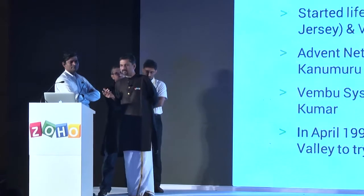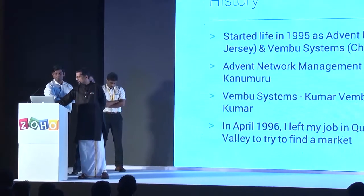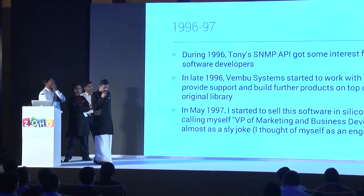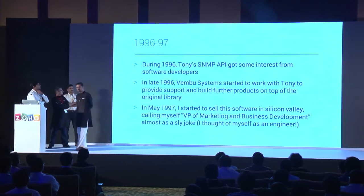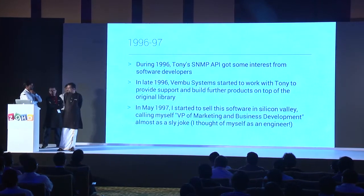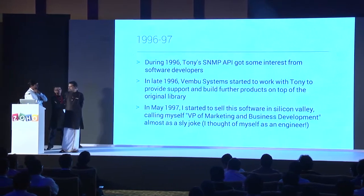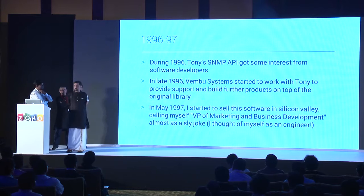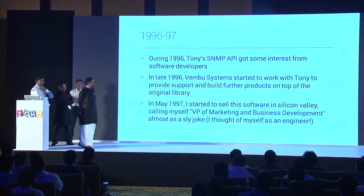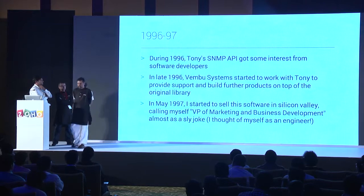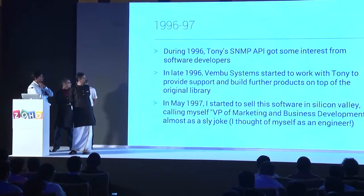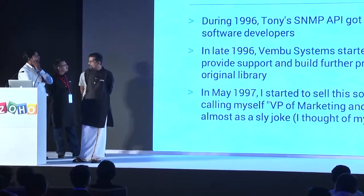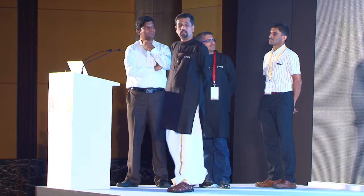It was only in 96, a few months after all this, that I moved to Silicon Valley. The goal was to find some market, figure out what to do. In 96, Tony's SNMP API got some interest from developers — people wanted to use it for building apps on top. It was a little library. I was the one who made the connection between what Kumar was doing and what Tony was doing. These guys started writing additional code, additional products, additional support.